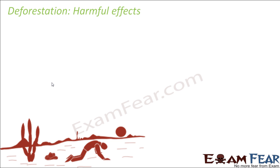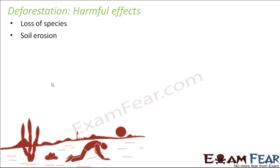The harmful effects of deforestation: first is loss of species. When we remove entire forests, we are killing all the species of that forest because they lose their habitat and the environment they need to survive. For example, a tiger cannot live in an apartment — it needs its forest environment, the same trees, the same ecosystem, and other animals as food. If we cut down the forest, the tiger cannot survive, and we lose many species that were part of that ecosystem.